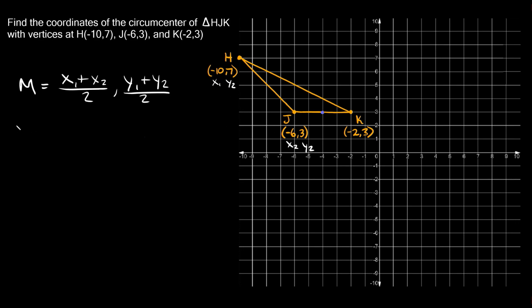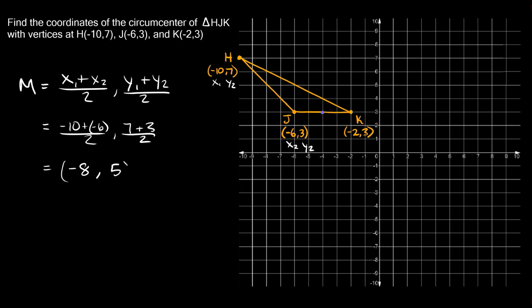Plugging into the formula, the midpoint equals (x₁ + x₂)/2, (y₁ + y₂)/2 = (−10 + −6)/2, (7 + 3)/2. On top: −10 plus −6 equals −16, and −16 divided by 2 is −8. Then 7 plus 3 is 10, and 10 divided by 2 is 5. So the midpoint is at (−8, 5) — we go to −8 and up to 5 on the graph. This is the midpoint between H and J.